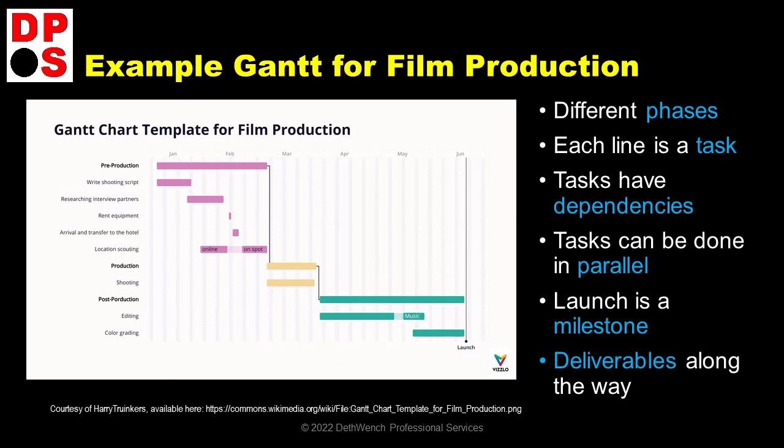So right away, we see the pre-production phase — the pink phase — will last from January through about the middle of February. And if we want to know what all is happening in the pre-production phase, we can see the breakdown of tasks in pink below it. Notice how the first two tasks in the pre-production phase — right shooting script and researching interview partners — kind of overlap at the end. This just indicates that these two tasks can be going on simultaneously.